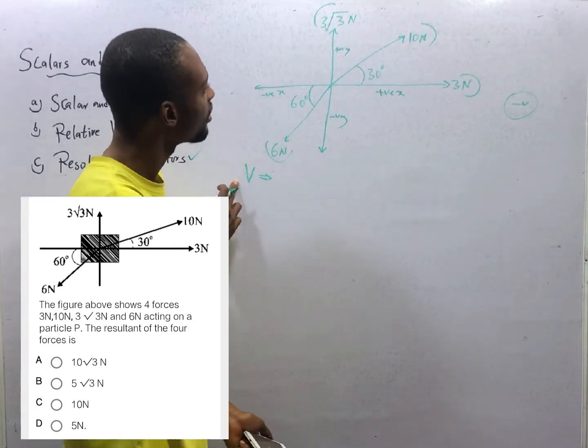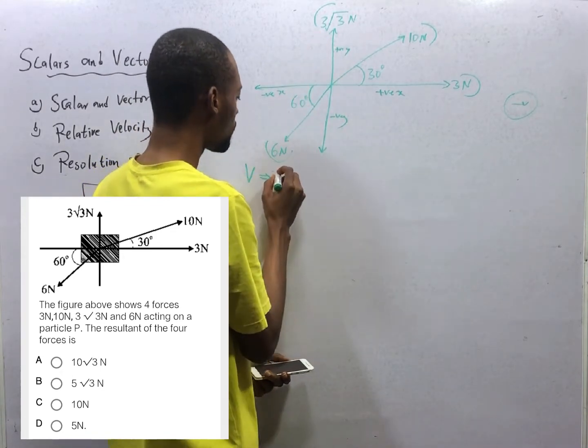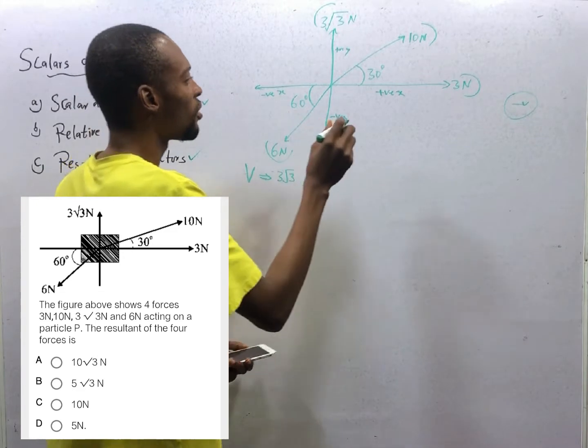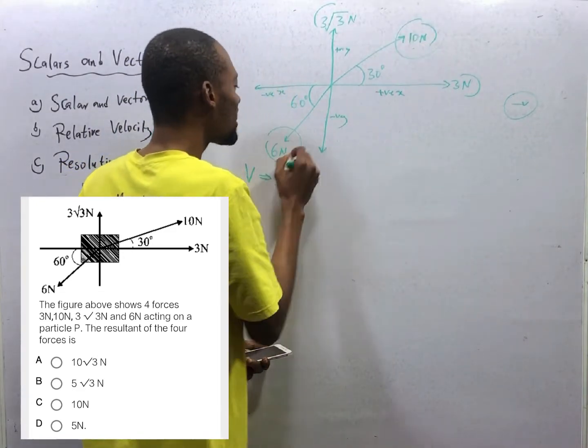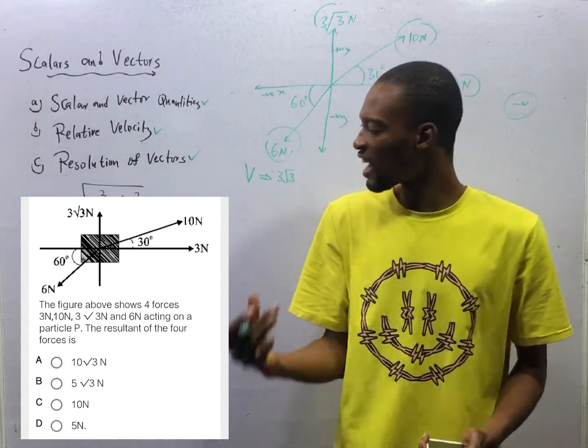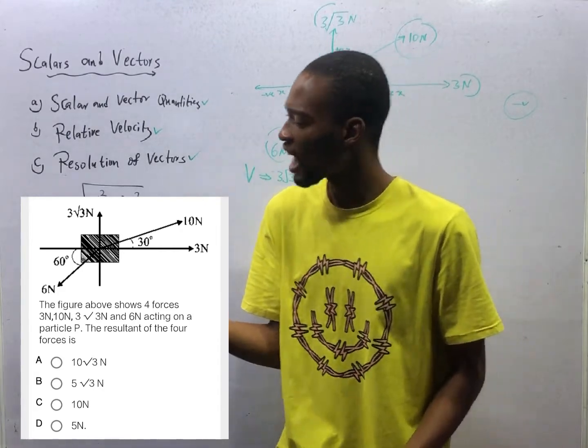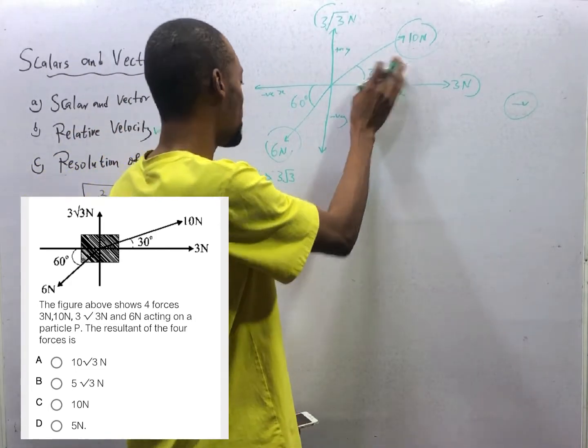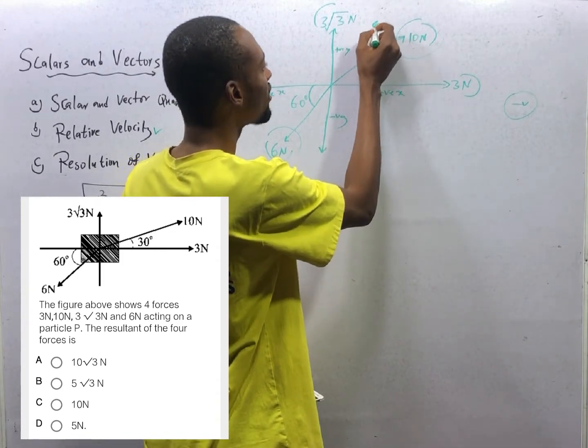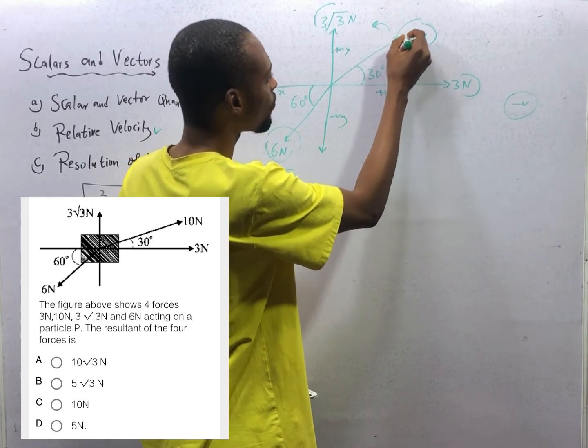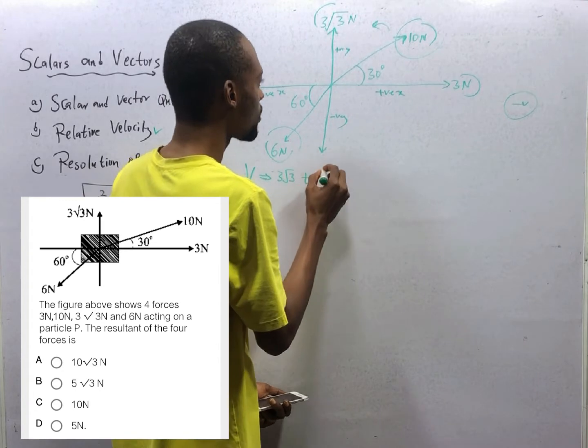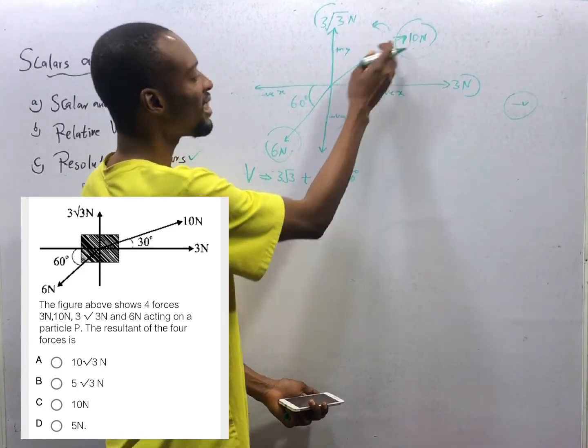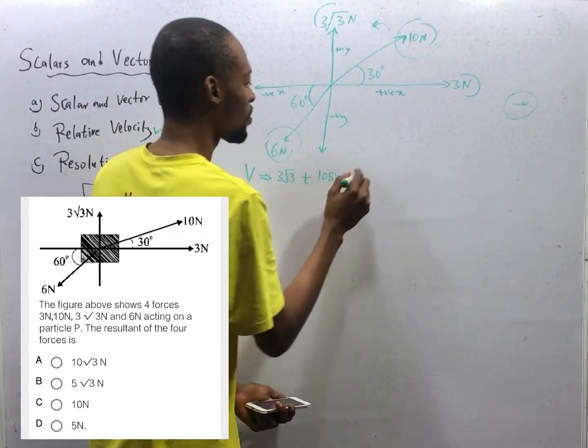For the vertical, we have 3 root 3. No need to resolve because it is already in the vertical. Now, this guy and this guy, since they are inclined, it means they are in two axis. They are both in vertical and in the horizontal axis. Any inclined body can be resolved or is resolved into both the vertical and horizontal. Our concern now is the vertical. Let's resolve this guy to vertical. Resolving 10 newtons to the vertical, it is, look at the arrow is going here. So it is the same direction with this. Plus. Plus 10 sin 30 degrees. You notice, we are opening up this angle. It is inclined to the horizontal. We are opening it up. So we sign.